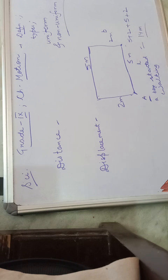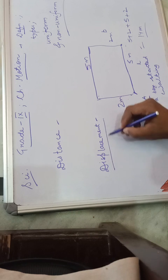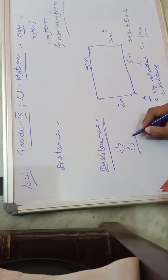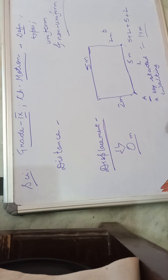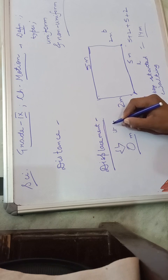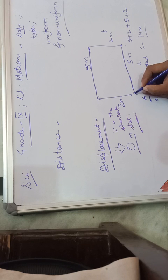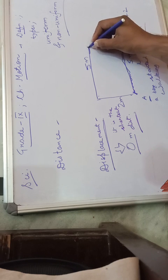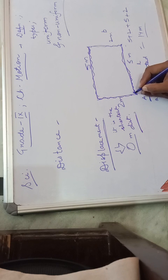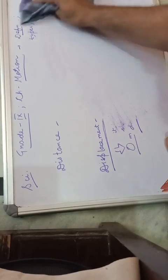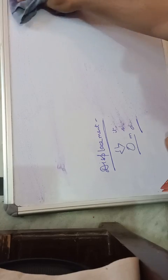But if we talk about displacement in this case, displacement is 0. The definition of displacement is that it is the shortest distance between the starting point and the ending point. The boy started from point A and came back to point A. When the starting point and the ending point are the same, displacement is zero.